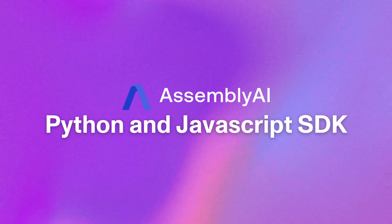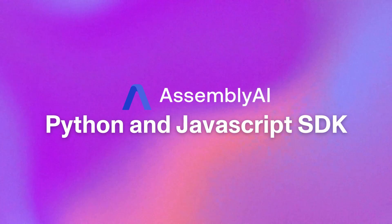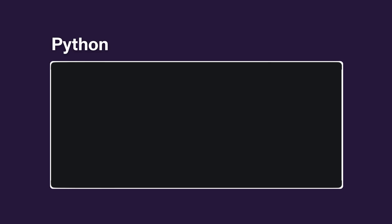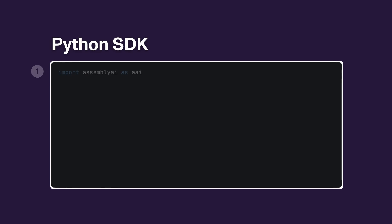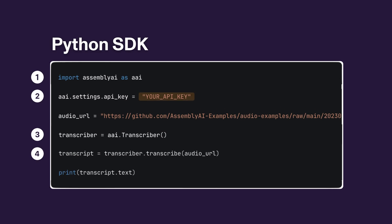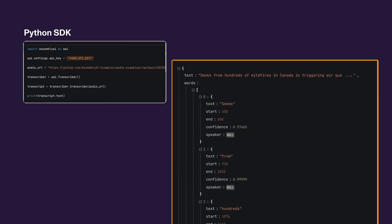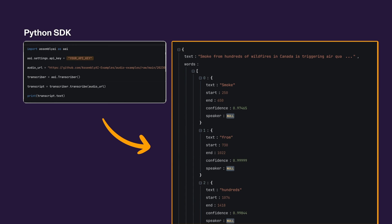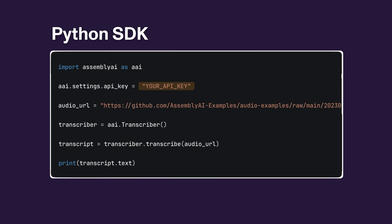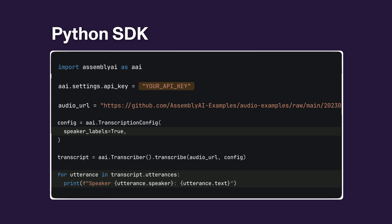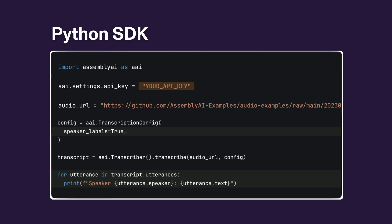We can't start this list with anything other than our SDKs. With the Python SDK, four lines of code and you have a full transcription, including timestamps of each word. You can also toggle any conversational intelligence model on, including speaker diarization, summarization, sentiment analysis, and more.